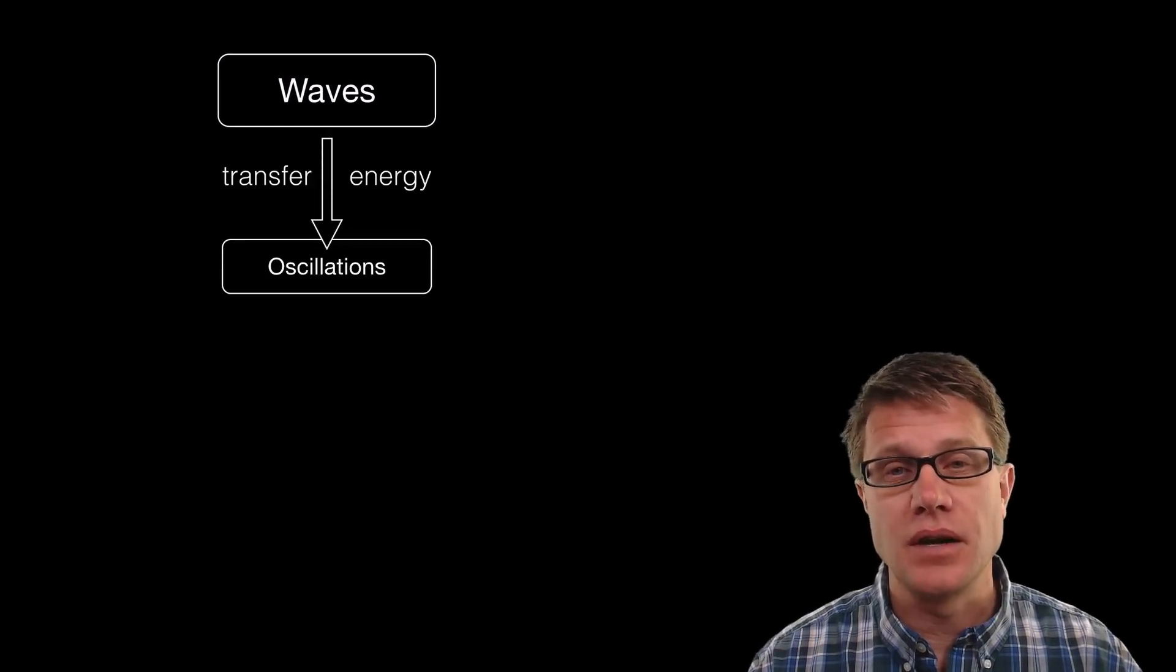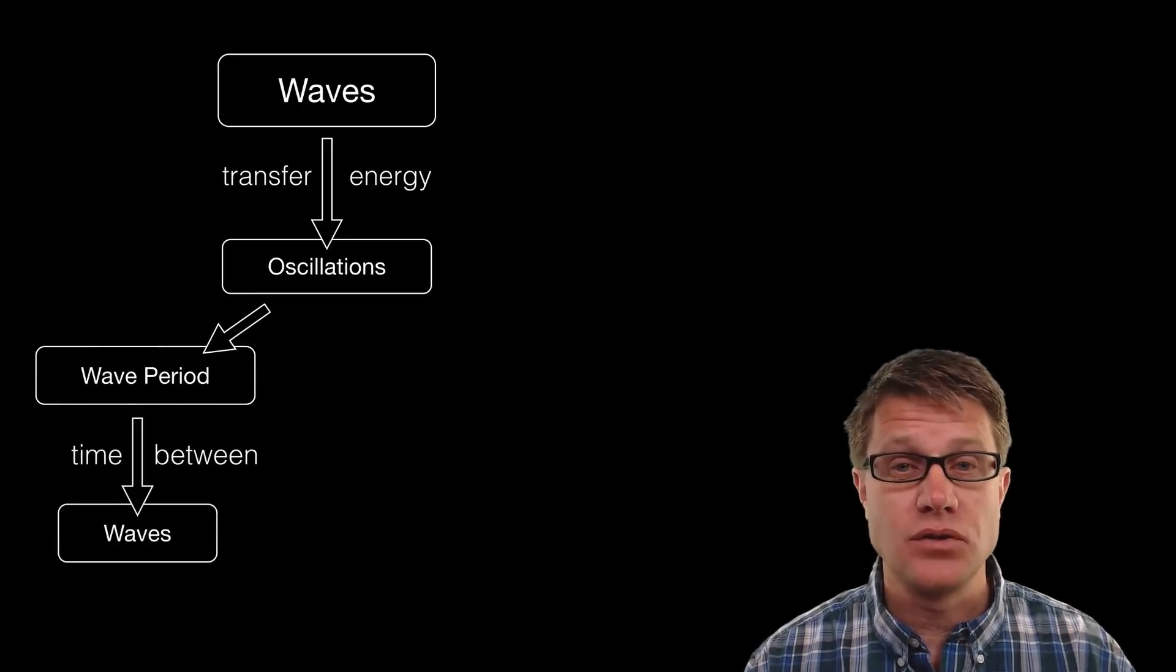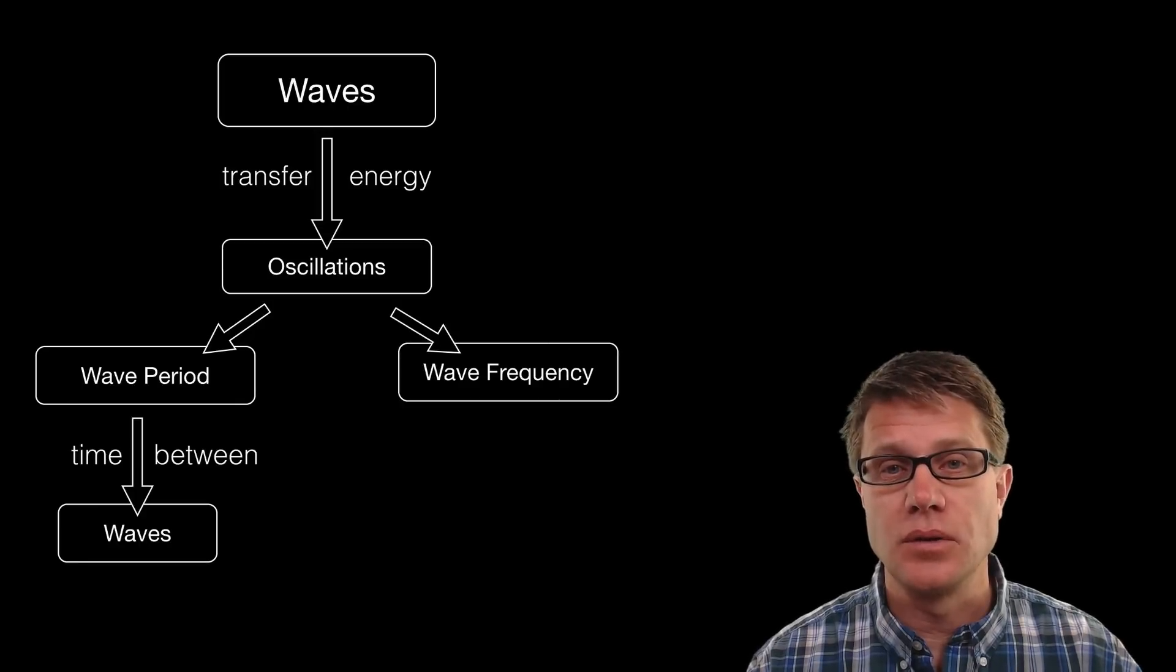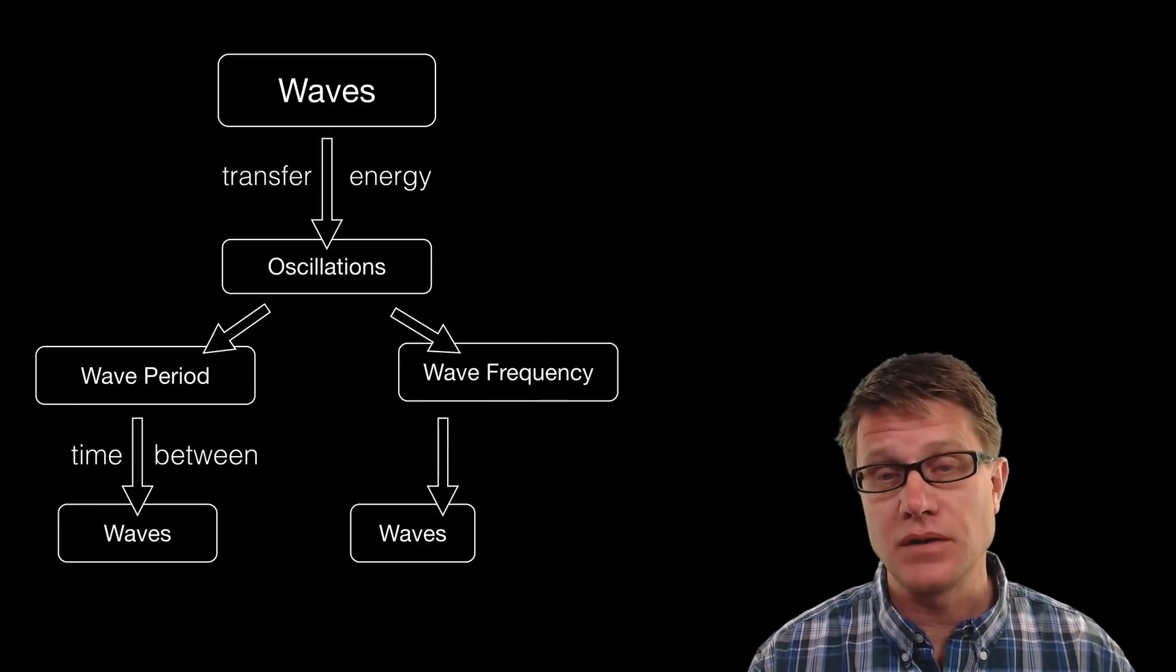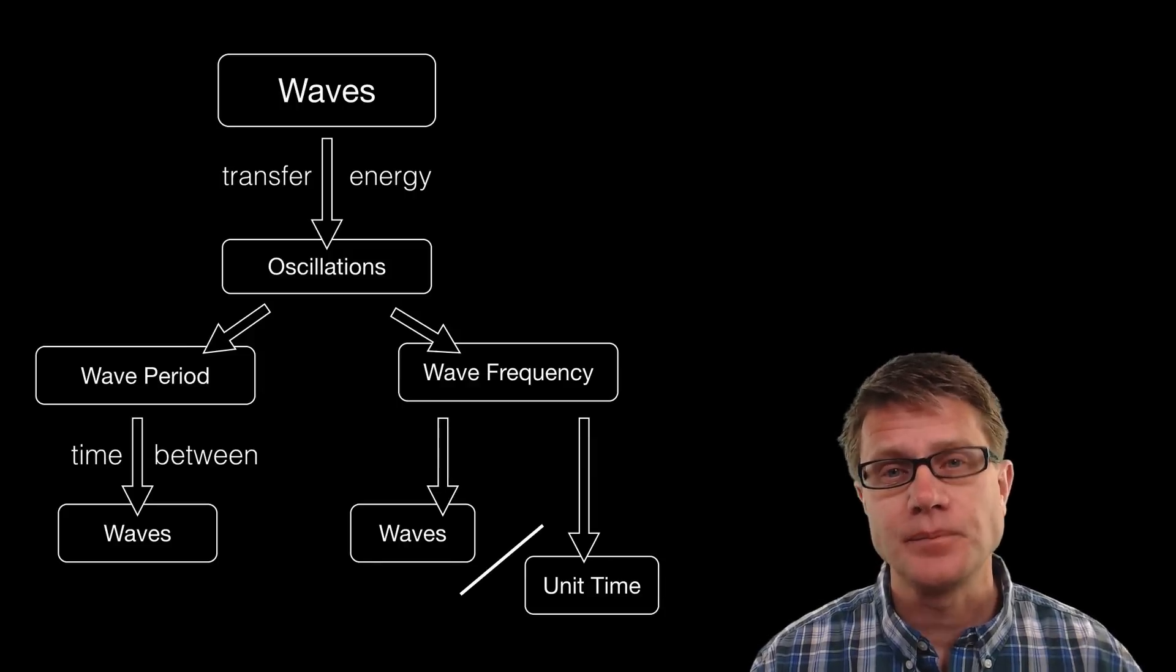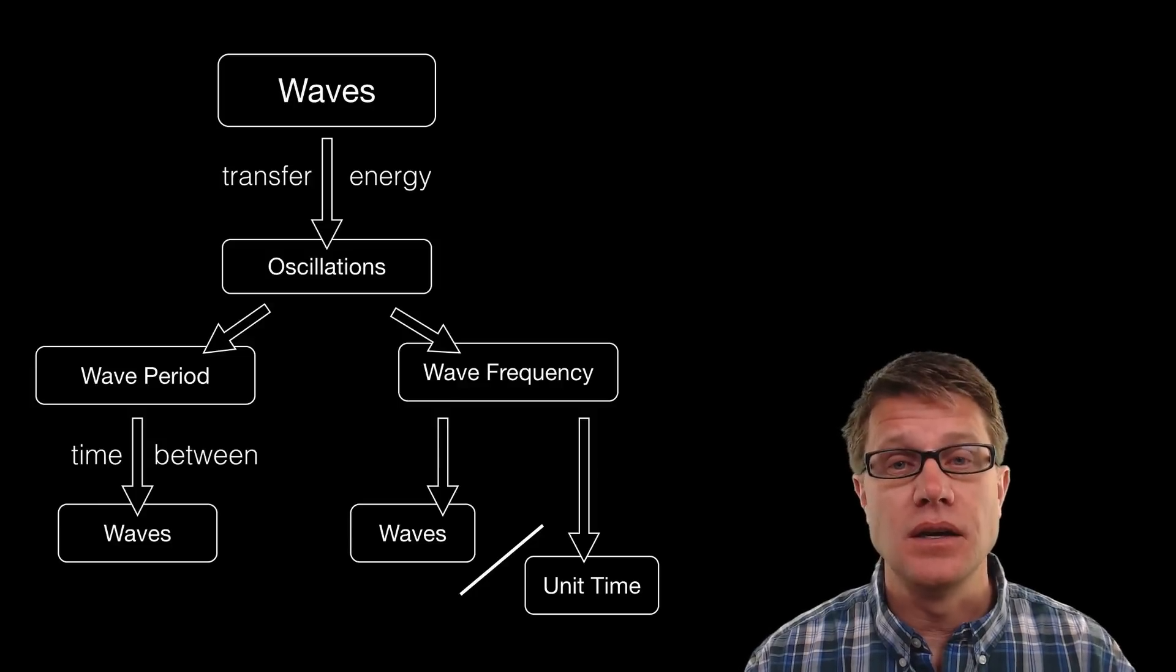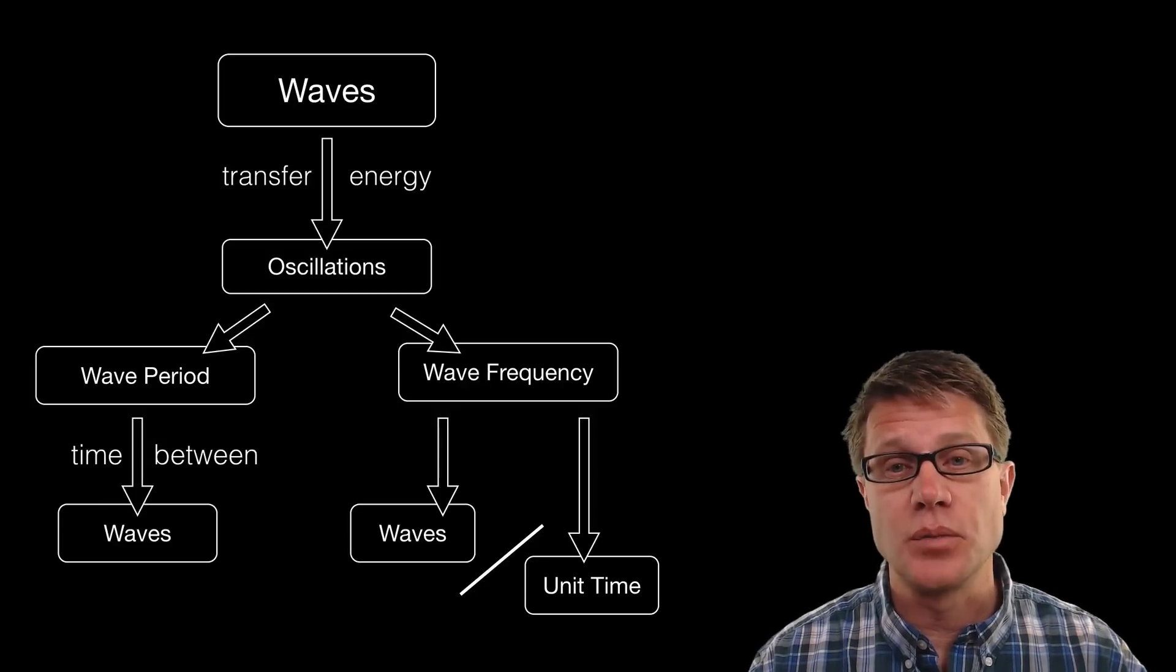Waves transfer energy through oscillations. The wave period is going to be the time between the waves, and then the wave frequency is going to be a set number of waves per unit time. Now we measure period in seconds, and then we're going to measure wave frequency in hertz, which is the number of waves per unit time.